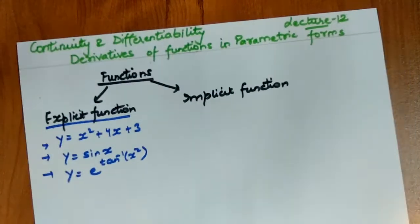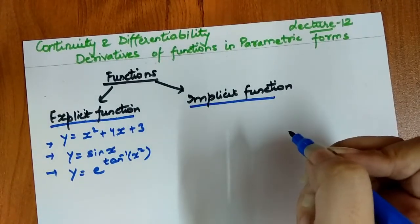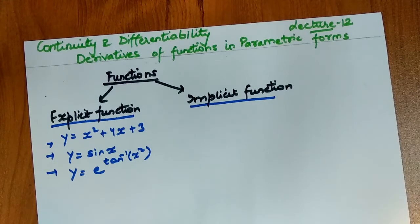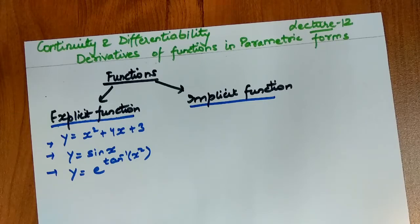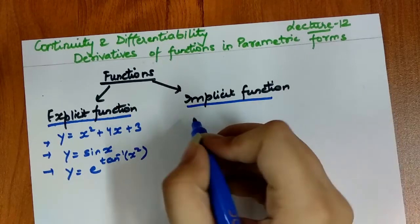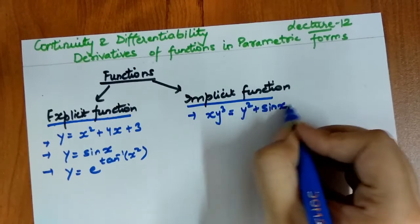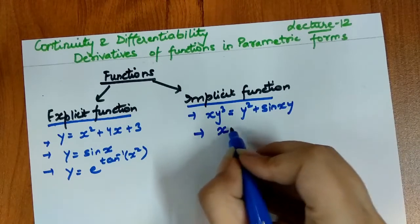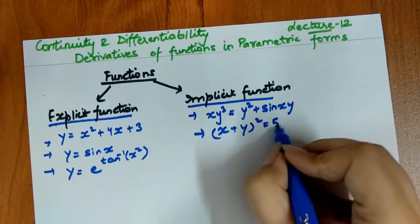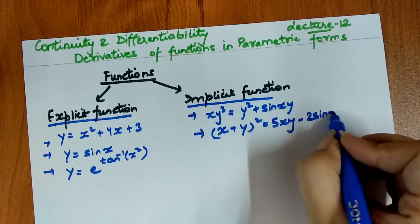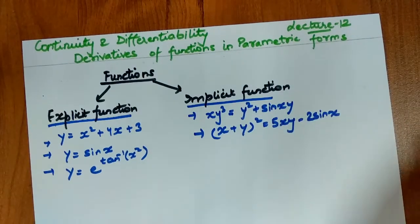The second type is implicit functions. An example of an implicit function is: (x + y)² = 5xy − 2 sin x. These are implicit function examples. You can see the similarity between explicit and implicit functions: x and y are both in one equation as variables.